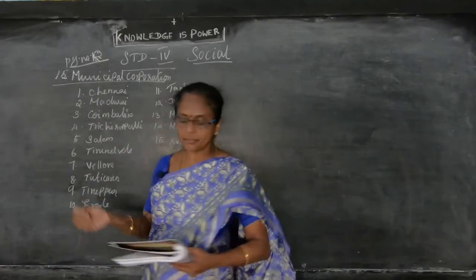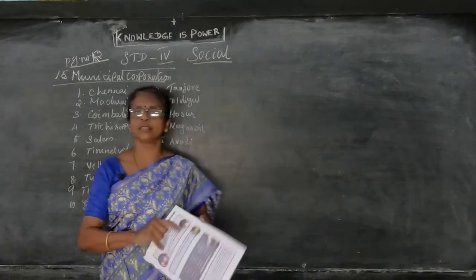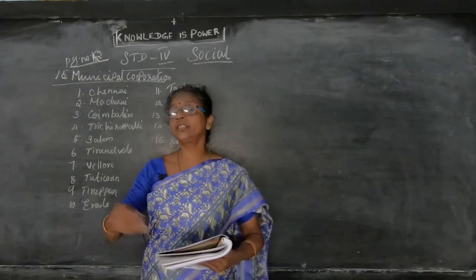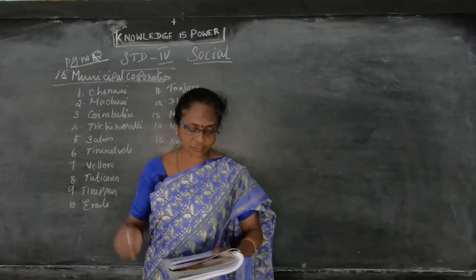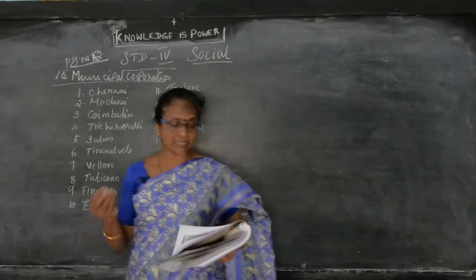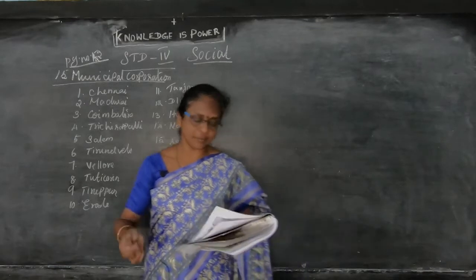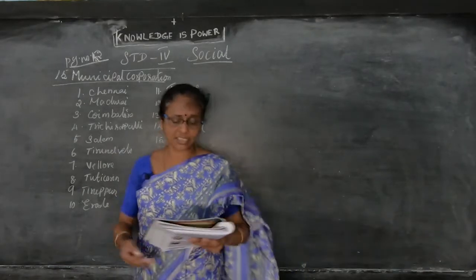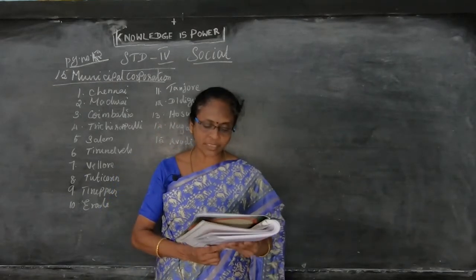Now, where do the municipal corporations get their sources of income to maintain all these things? The corporation collects asset tax, professional tax, wealth tax, entertainment tax, customs duties, and road tax. These taxes are collected from the people, which goes into the corporation, and they use it to provide all these facilities to the people.